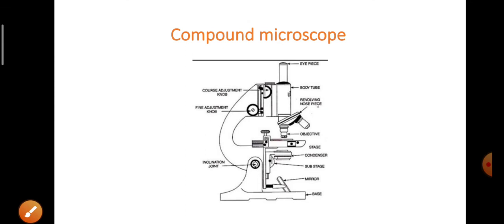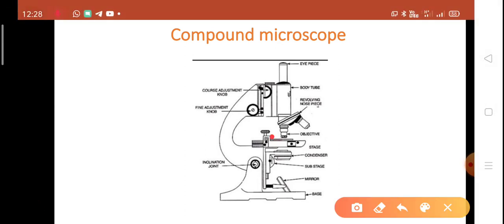See the structure of compound microscope. We can put the slide over here and we can see from this hole. This is the eyepiece indicator. We put our eye here and observe the slide. We can see the cell structure, that box-like structure.